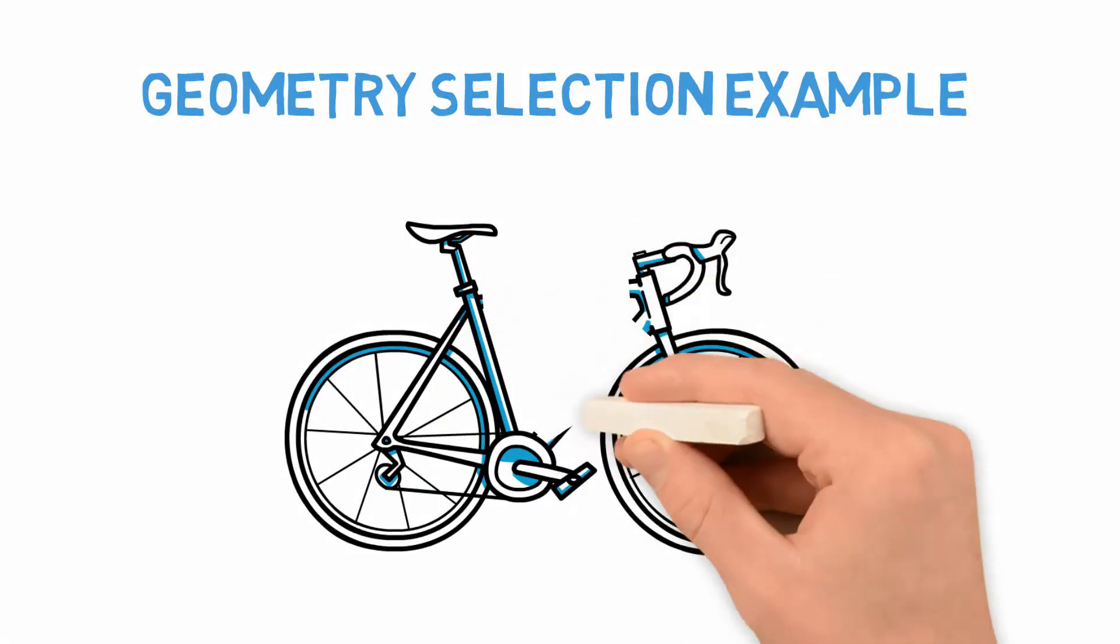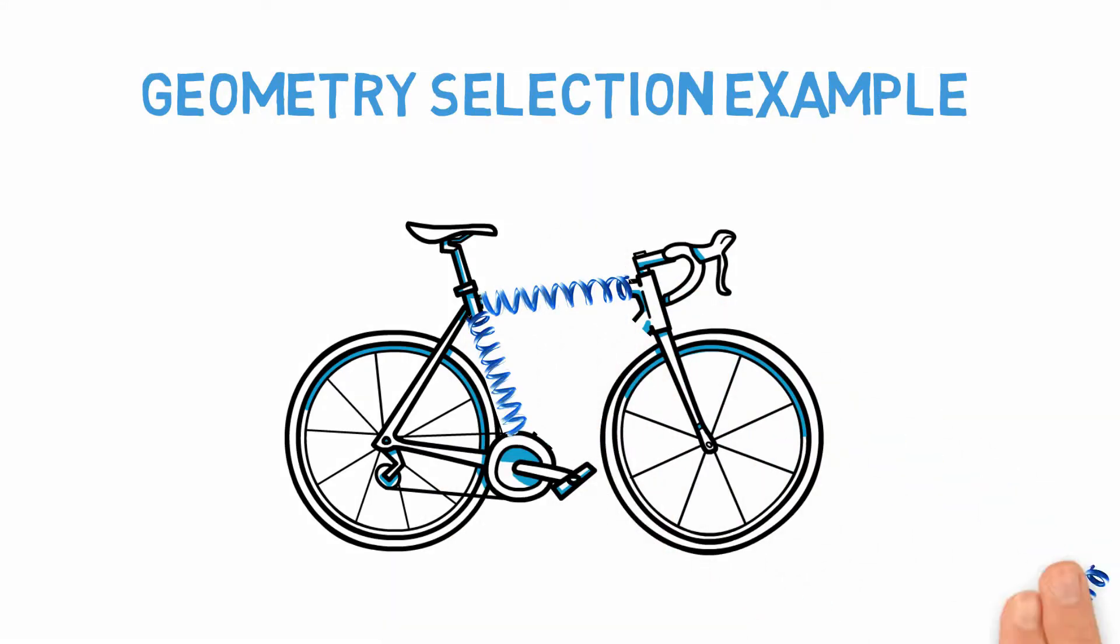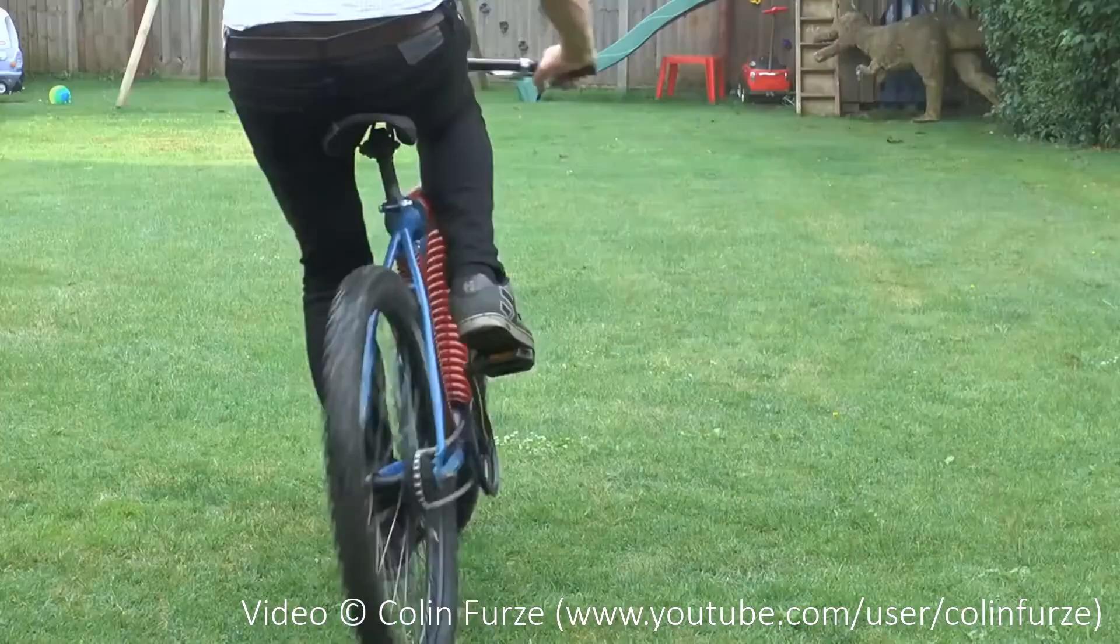It actually has to do with controllability and pedaling efficiency. You might be able to visualize this a bit better if you imagine a bicycle frame made out of very strong, but very flexible springs.